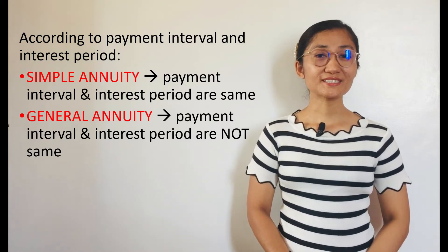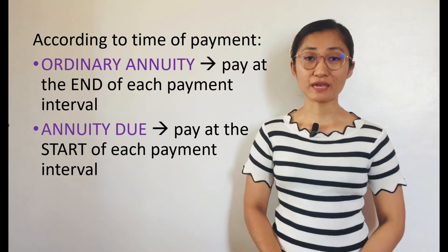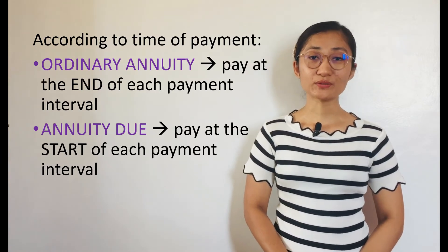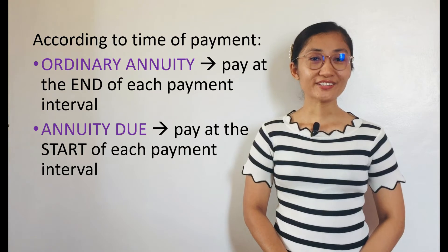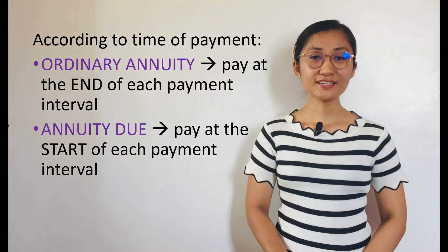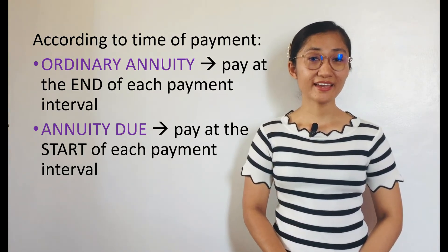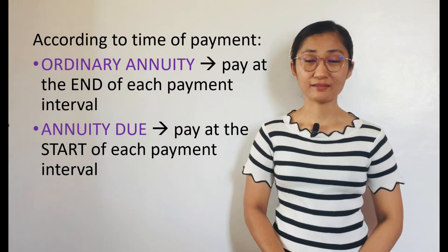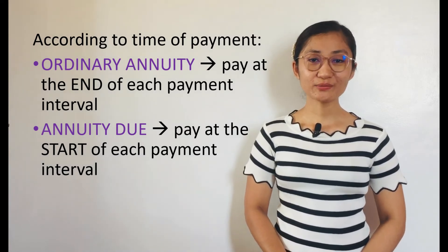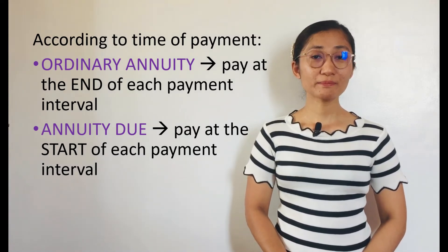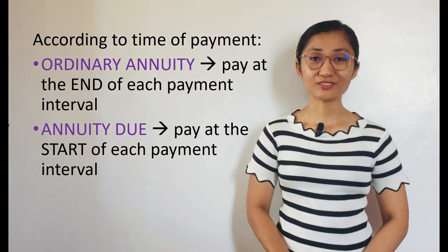Annuities may also be classified according to time of payment as ordinary Annuity and Annuity Due. Ordinary Annuity is an Annuity where payments are made at the end of each payment interval, while Annuity Due is an Annuity where payments are made at the start of each payment interval.